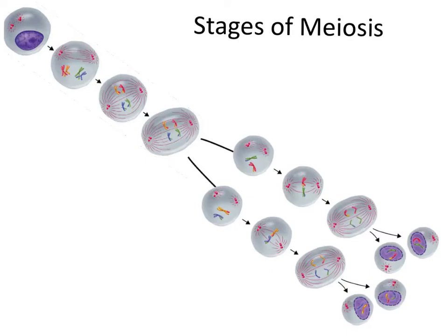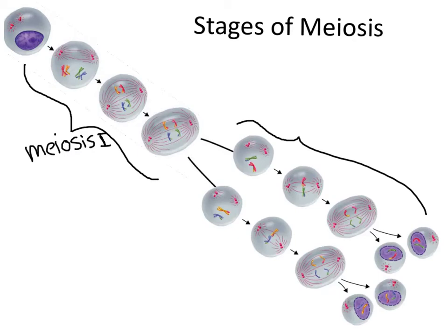And while meiosis shares some similarities with regular old mitosis, the key differences allow us to create gametes at the end that have half the number of chromosomes that were originally inside the parent cell, and also have unique combinations of chromosomes in comparison to each other. Now, meiosis is so complicated that it's actually been broken into two parts, logically named meiosis 1 and meiosis 2. Within those, they follow a lot of the same phases that mitosis does, so some parts of this will be familiar, but we're going to talk about key differences along the way, taking each of these phases in turn.